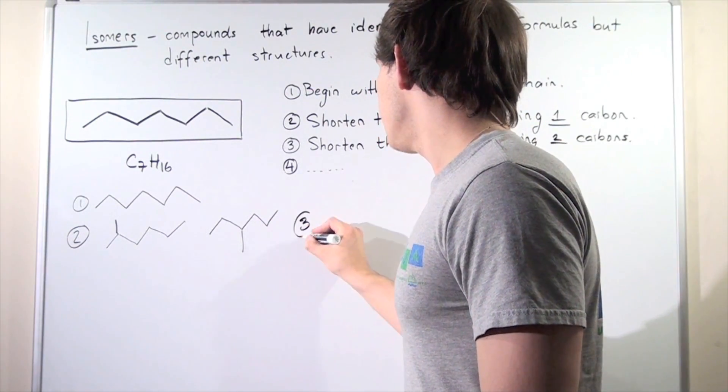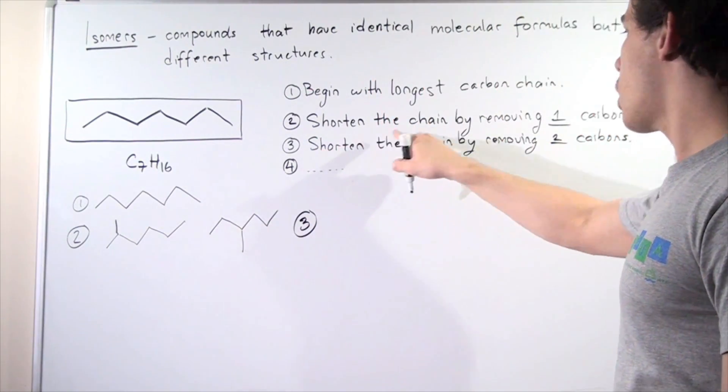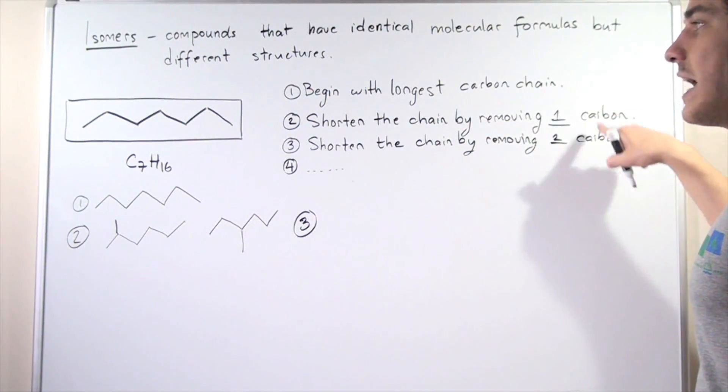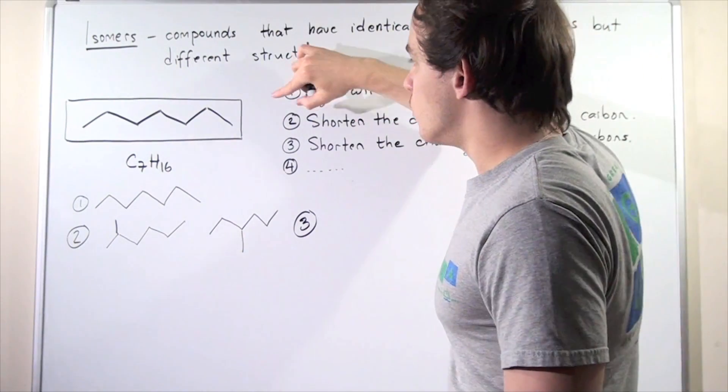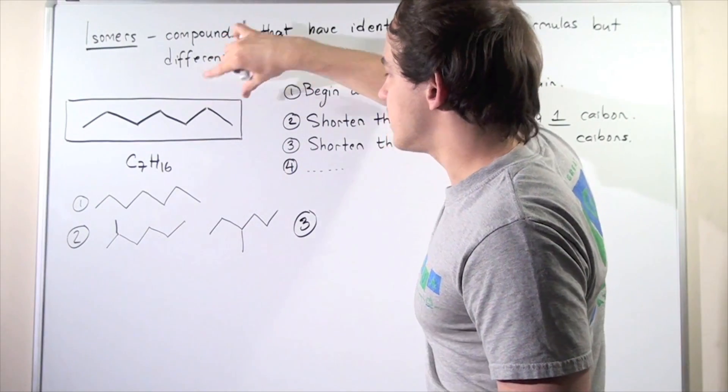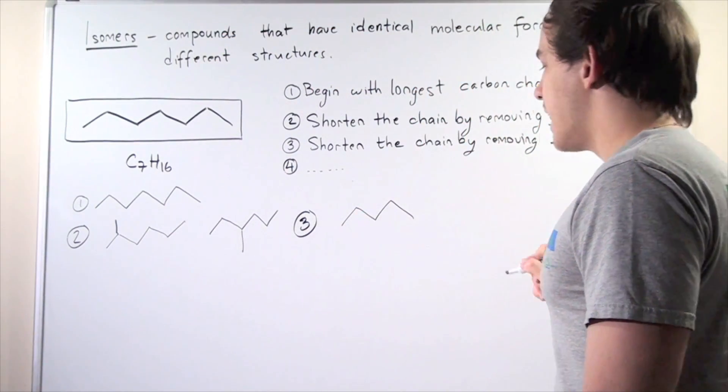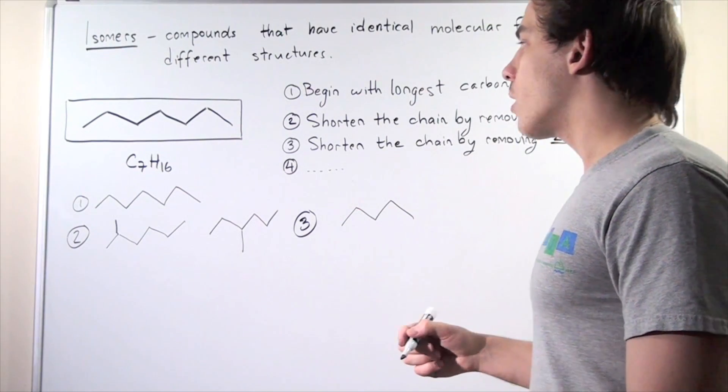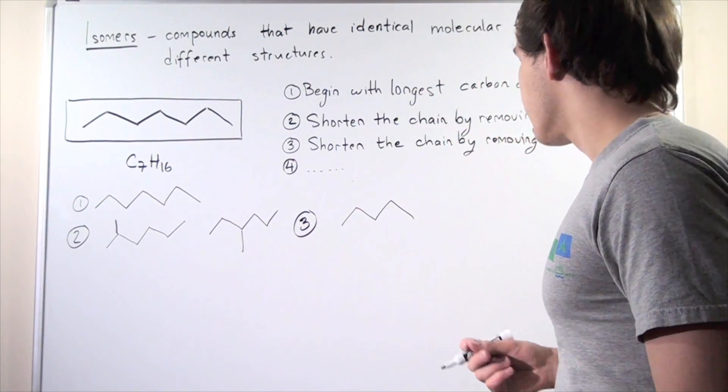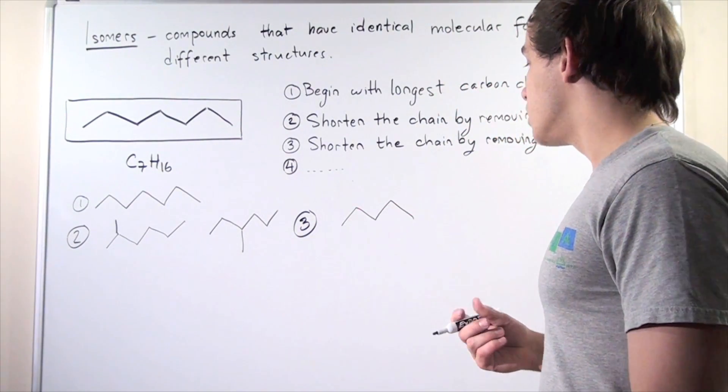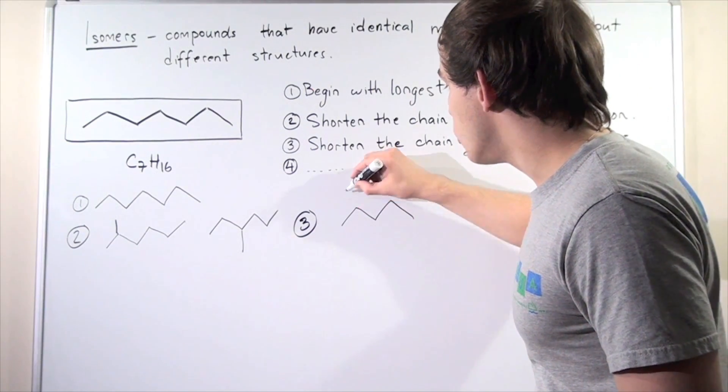So in step three, shorten the chain by removing two carbons, not one, but two. So now we're removing this carbon as well as this carbon. So we're developing a pentane molecule and now we have two carbon atoms at our disposal, two methyl groups at our disposal.